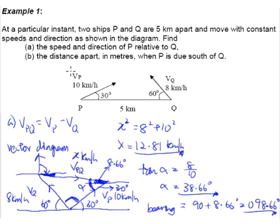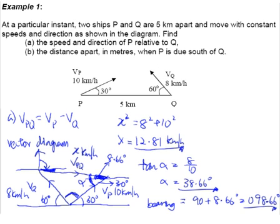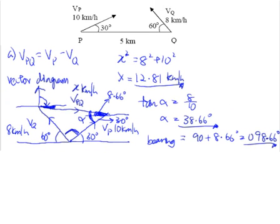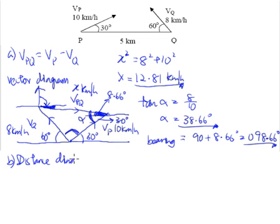Now let's go on to Part B. This is an almost entirely new type of question: the distance apart when P is due south of Q. We need more space, so we scroll down while keeping the vector diagram in view. This is when we need to incorporate the concept of a distance diagram — you need to draw a separate diagram to talk about distances.